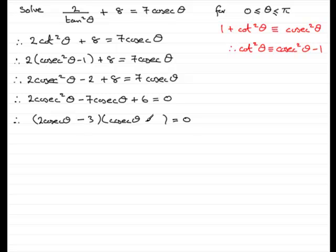And if I put minus 3 there and minus 2 there, you can see that I get minus 4 cosec theta minus another 3 cosec theta, which is minus 7 cosec theta. And then minus 3 times minus 2 is plus 6. So there we go.